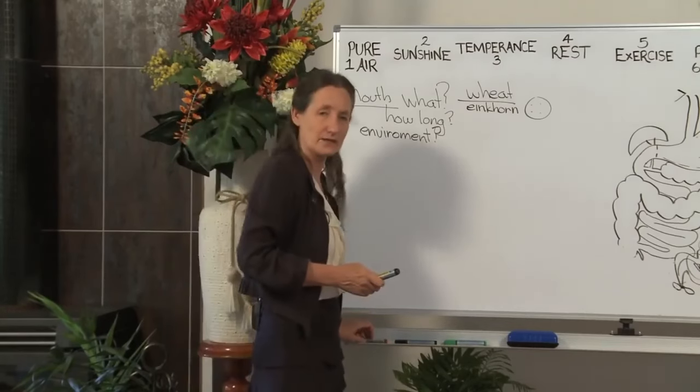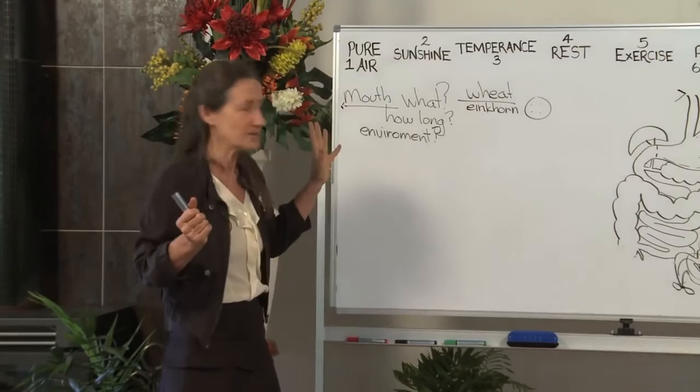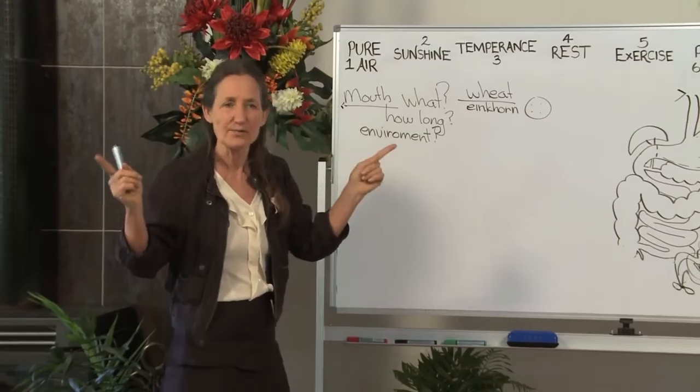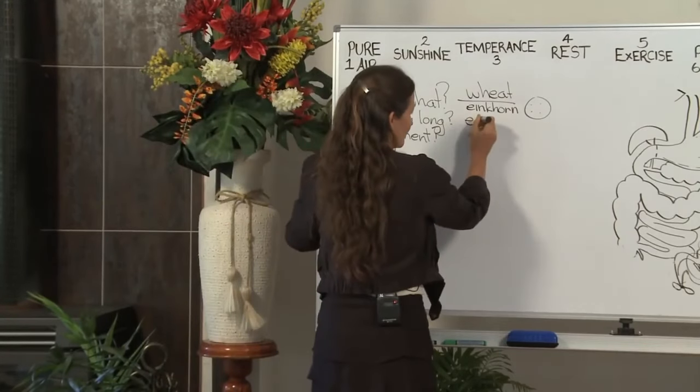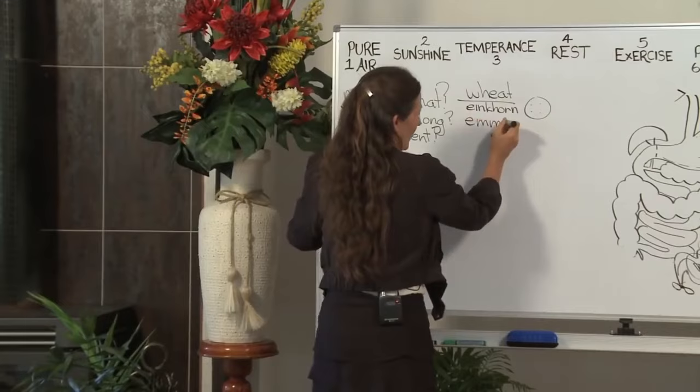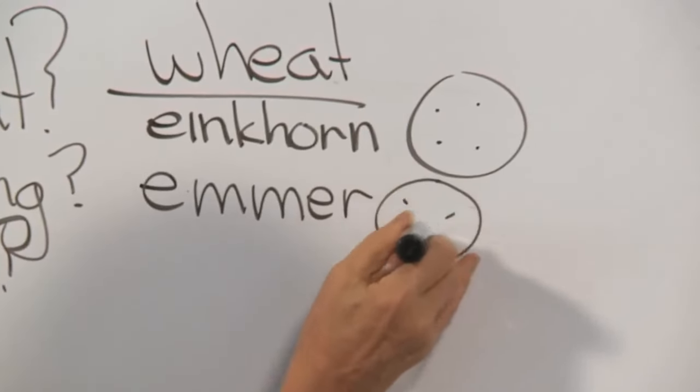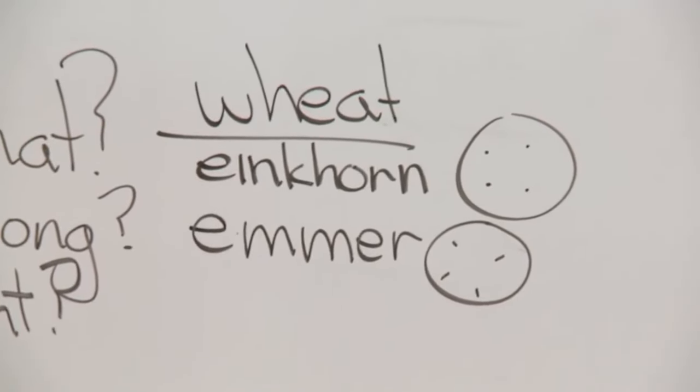It is not sure when, maybe a few thousand years ago, enkhorn did a wild cross or a wild hybrid, they call it, with a wild grass and came up with an emmer strain. And this emmer strain, still fragile, still fragile, but not quite as fragile a structure.